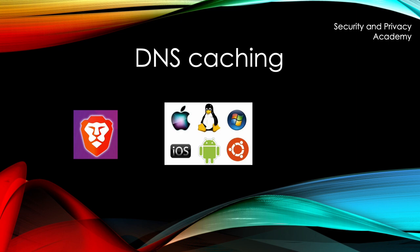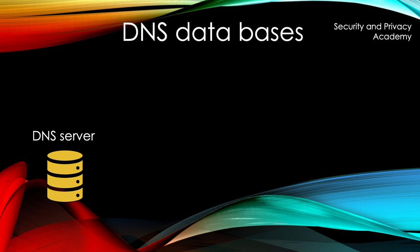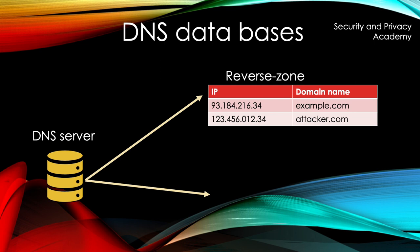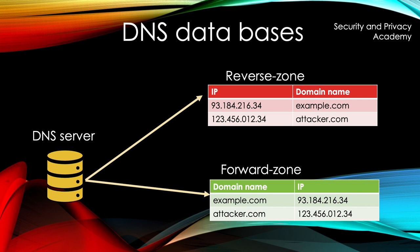Those servers have two databases: first, the reverse zone table, which stores the link between IP address and domain name; and the forward zone table, which stores the link between domain name and IP address. There is no check whether these two actually match, which can be exploited in an attack called DNS spoofing.